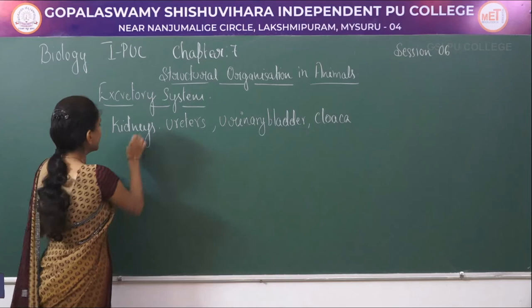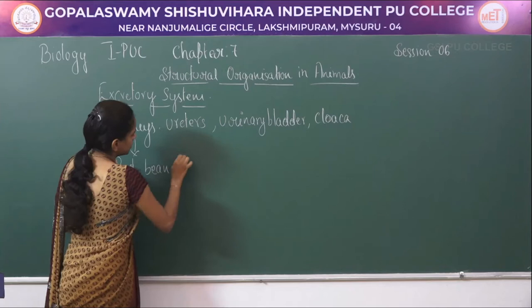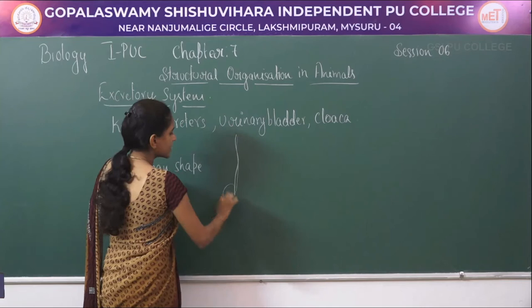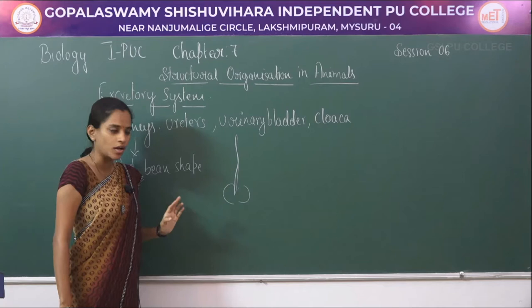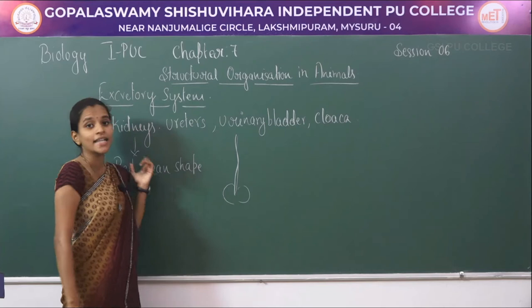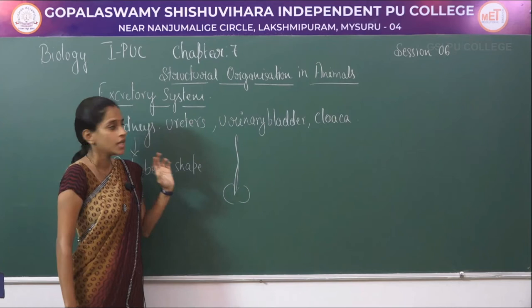The kidneys are red colored and bean shaped. If you look at the vertebral column, they are present on either sides at the ends of the vertebral column. They are in pairs, bean shaped, and red colored — that is the position of the kidney.